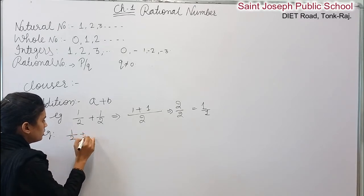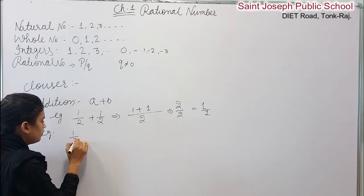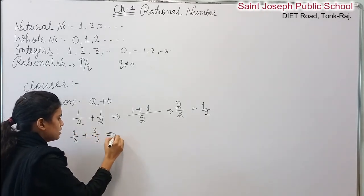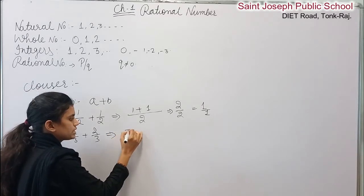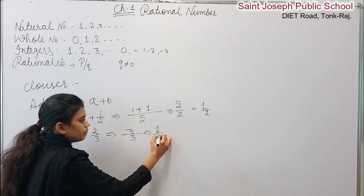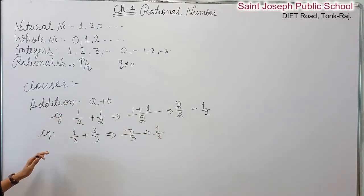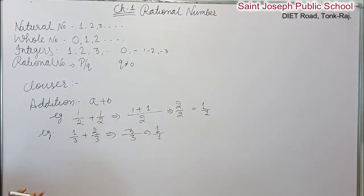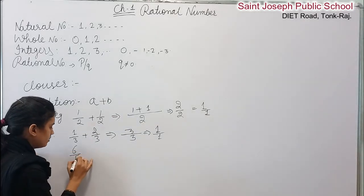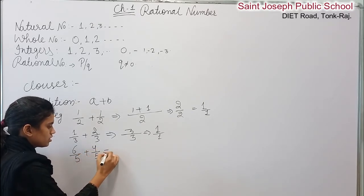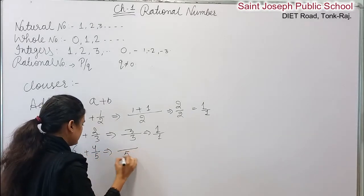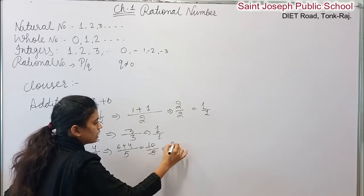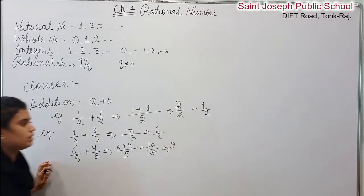1 by 3 plus 2 by 3: the denominator is the same, so 1 plus 2 gives 3 by 3, which equals 1 — again a rational number. Another example: 6 by 5 plus 4 by 5. Adding the numerators: 6 plus 4 equals 10 upon 5, which gives us 2. This is also a rational number.